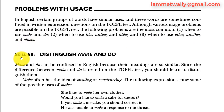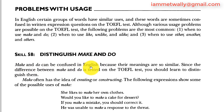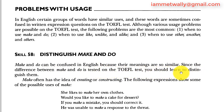Let's go with the first one — Skill 58: Distinguish make and do. Make and do can be confused in English because their meanings are so similar. Since the difference between make and do is tested on the twofold test, you should learn to distinguish them. Make often has the idea of creating or constructing.